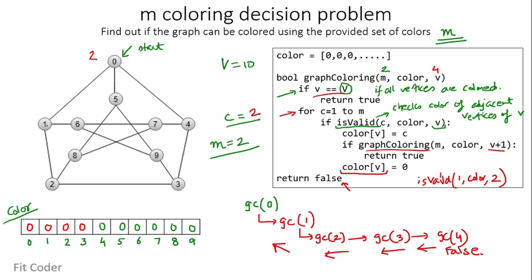Coming to vertex 1, we assign color 1 since it's not used by adjacent vertices. At vertex 2, color 1 is already adjacent, so we assign color 2. At vertex 3, color 2 is already assigned, so we assign color 1. At vertex 4, adjacent vertices have color 1 and color 2 respectively, so neither can be assigned. It returns false — meaning for M=2 graph coloring is not possible.